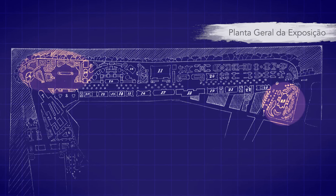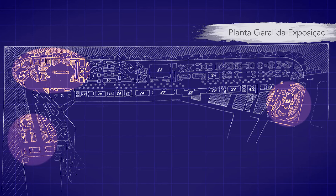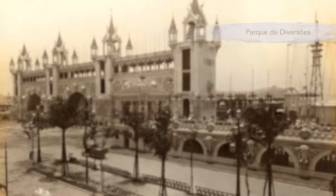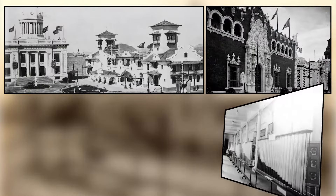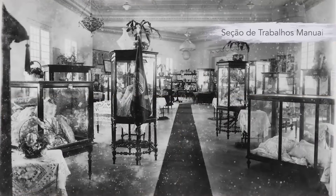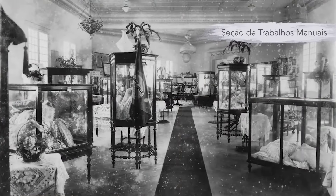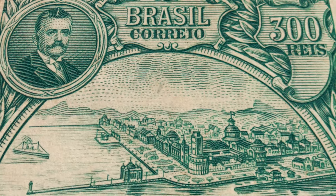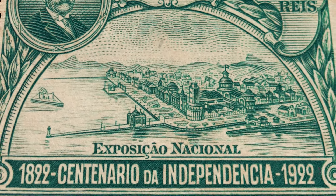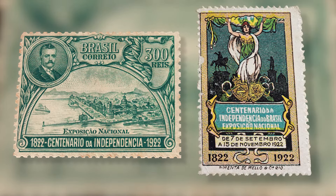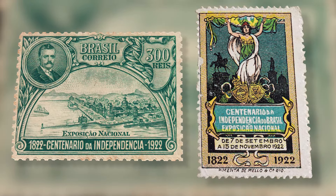A exposição ia da Cinelândia até a Praça XV e Praça Mauá. Pavilhões, quiosques e edifícios dos mais variados tipos eram cuidadosamente projetados e ornamentados para exibir o melhor que o país anfitrião podia produzir. Os países convidados também buscavam expor o melhor de suas produções. O Brasil queria comemorar os 100 anos da sua independência e mostrar como o país tinha se desenvolvido durante esse período.